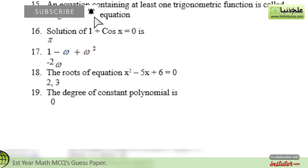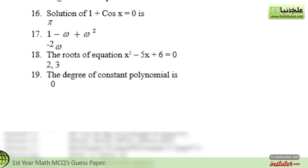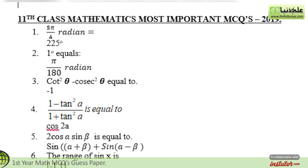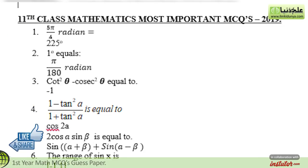These MCQs are provided with their answers, so that you don't have to find answers separately. The statements are shown on the screen with their answers, so you will not have to note them down. The first statement is: 5π divided by 4 radians equals — the correct option is 225 degrees.